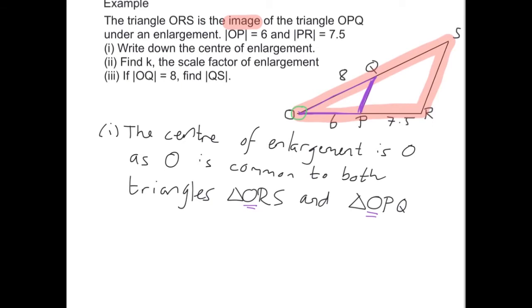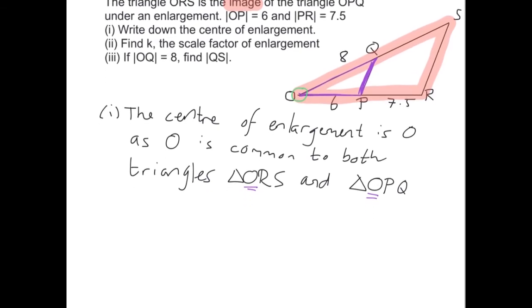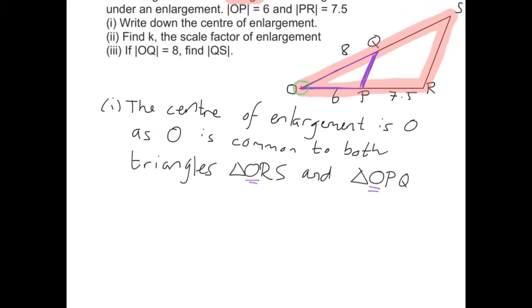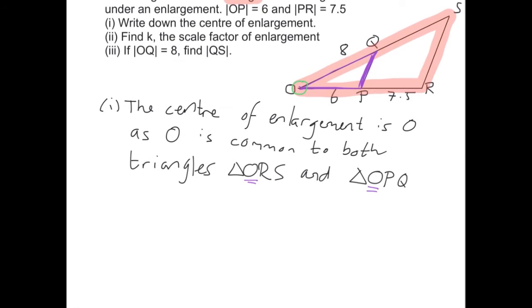To continue with this question, what we should do is write out the two triangles that we have, along with their measurements given. So we have two triangles here, we have the triangle that we started with OPQ, so this triangle here, OPQ.